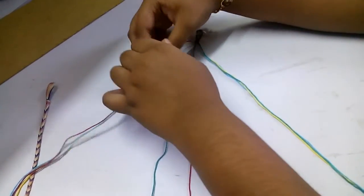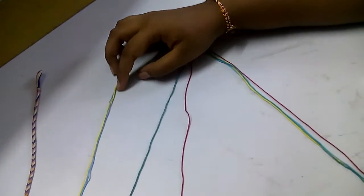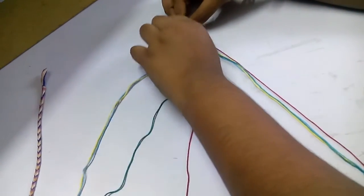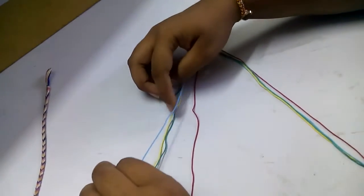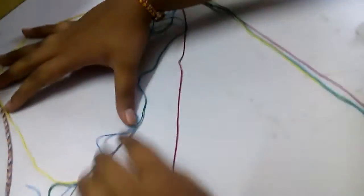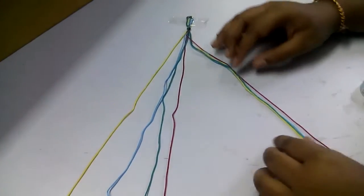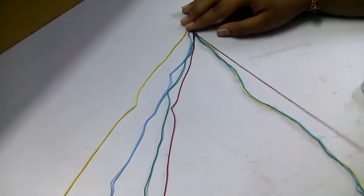If after dividing, some thread is less or missing, take it from the other side. Arrange it nicely on both sides in the same order.